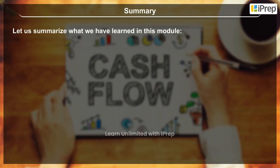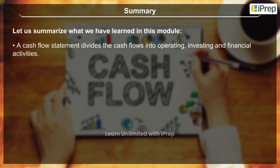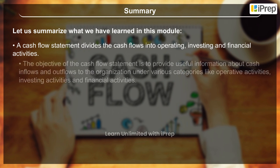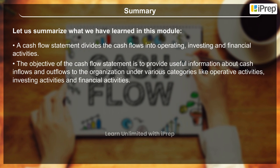Let us summarize what we have learned in this module. A cash flow statement divides the cash flows into operating, investing, and financial activities. The objective of the cash flow statement is to provide useful information about cash inflows and outflows to the organization under various categories like operating activities, investing activities, and financial activities.